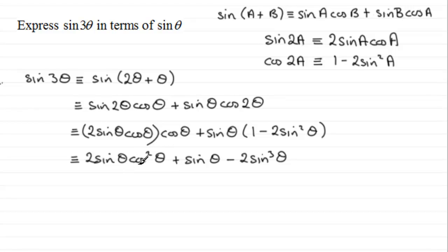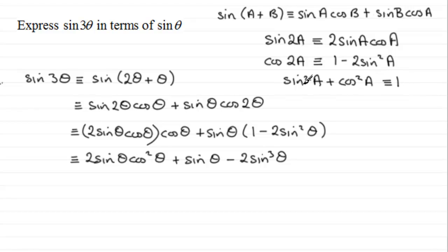The cos²(θ) term is still giving us a problem because we need everything in terms of sin(θ). The final identity we need is sin²(A) + cos²(A) = 1, rearranged to cos²(A) = 1 - sin²(A). So we rewrite the first term as 2sin(θ) multiplied by (1 - sin²(θ)).